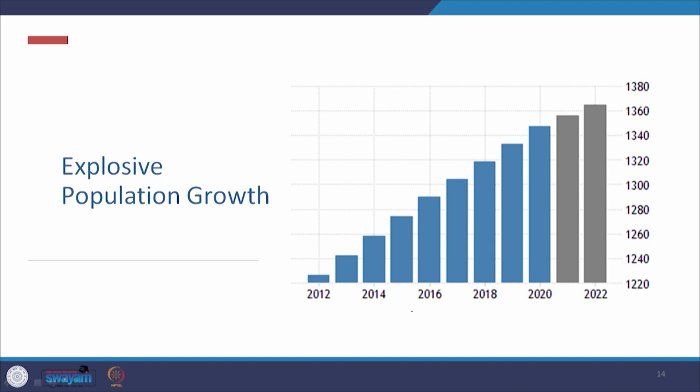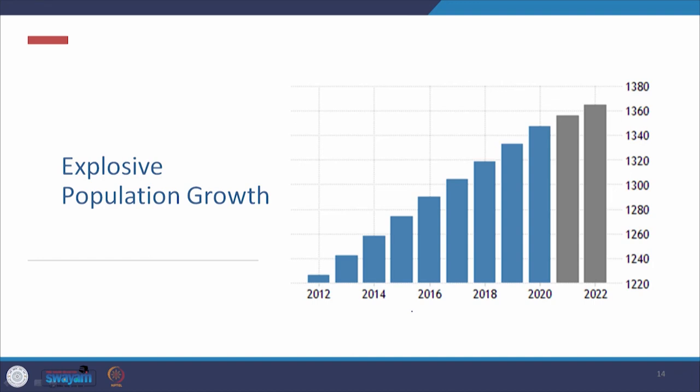How explosive is this population growth? In 2012, we were somewhere around 1.235 billion people. We are touching 1.36 plus billion in 2022 and this is going to rise, though the speed at which the population is growing is somewhat slowing down.